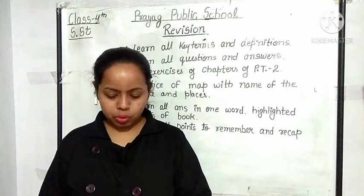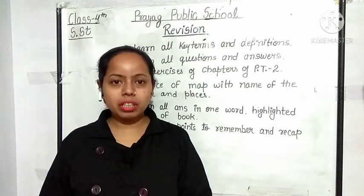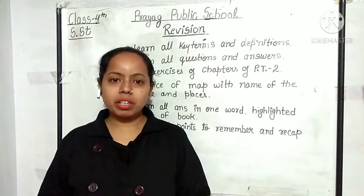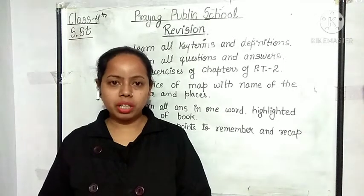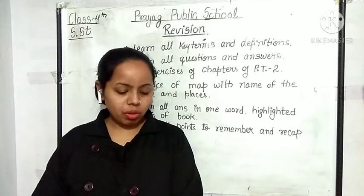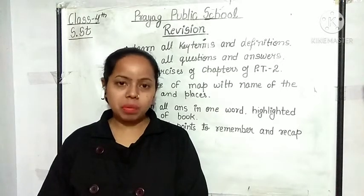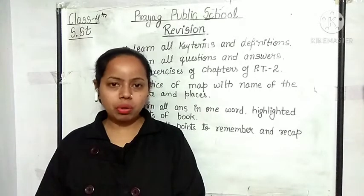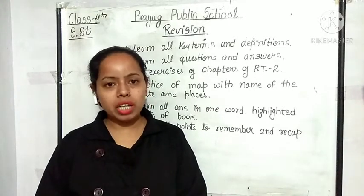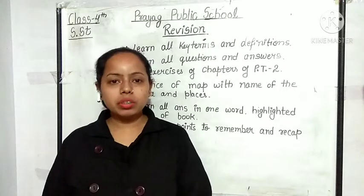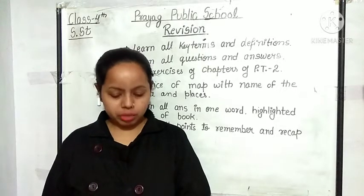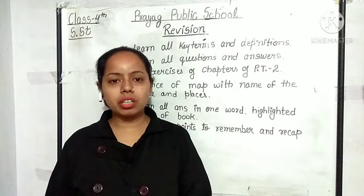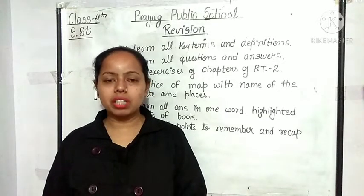If you look in the book, there is a word that is 'green gold' — our trees are known as green gold. We also have the terms 'black gold' and 'black diamond': petroleum is known as black gold and coal is known as black diamond. You all have to learn all the new words of this chapter, points to remember, and all the exercises included in the book as well as in your copy.